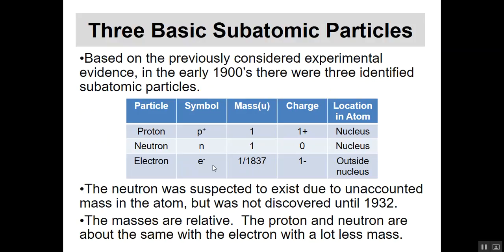At this point, we've got three basic subatomic particles. All were known around the 1900s, although the neutron wasn't discovered until 1932. We just knew it had to be there because we were missing mass in the atom. The three particles are the proton, the neutron, and the electron.